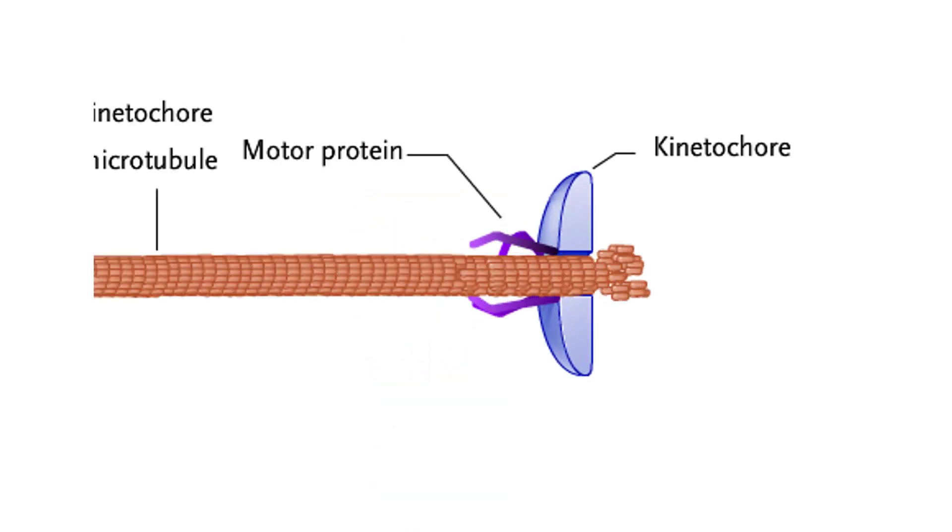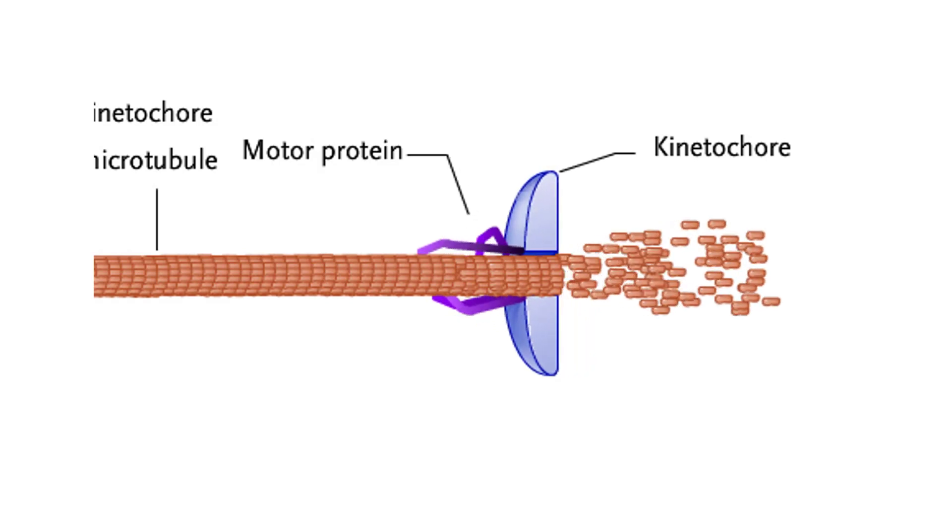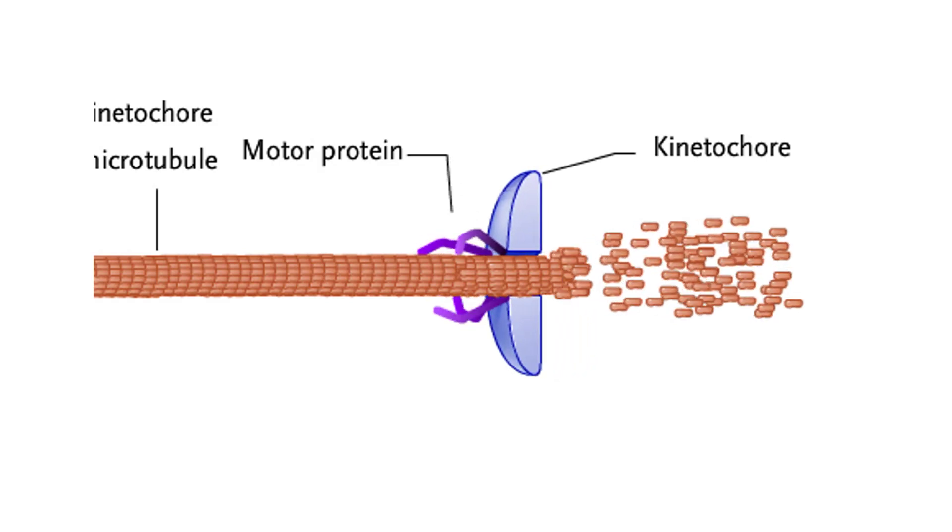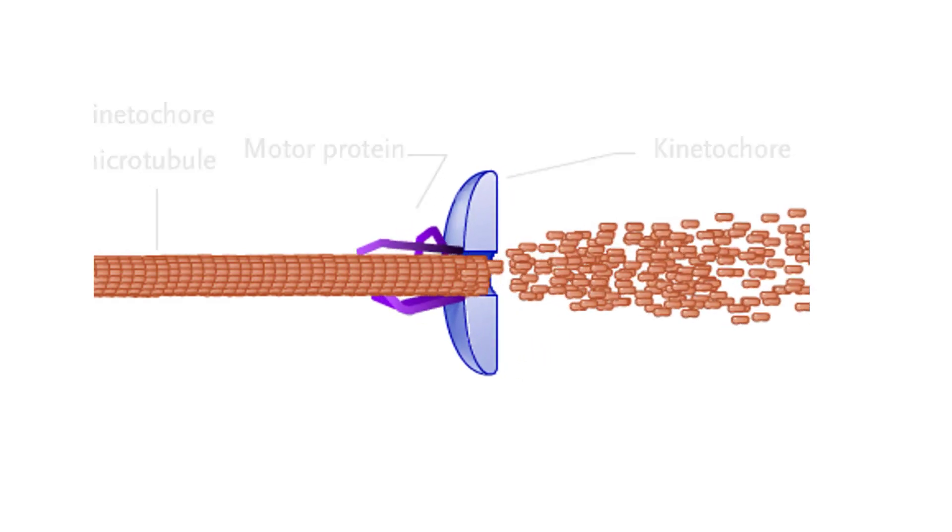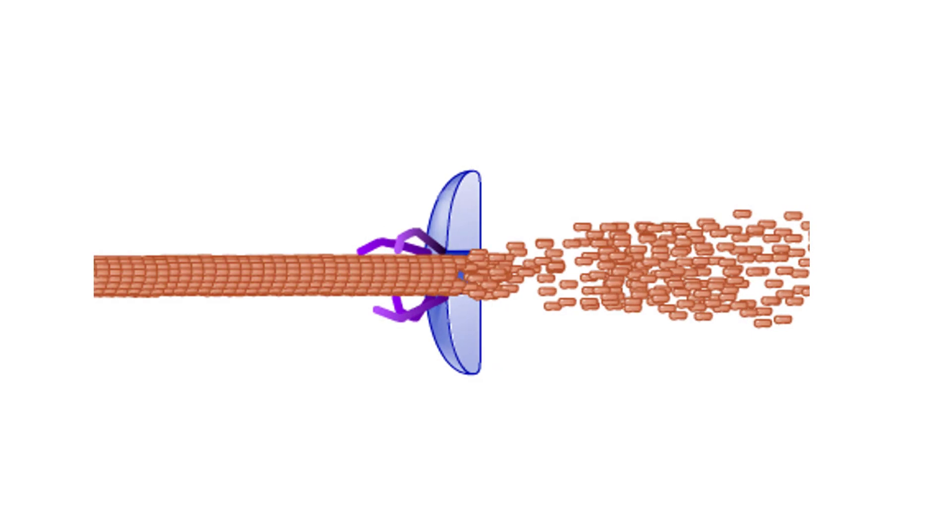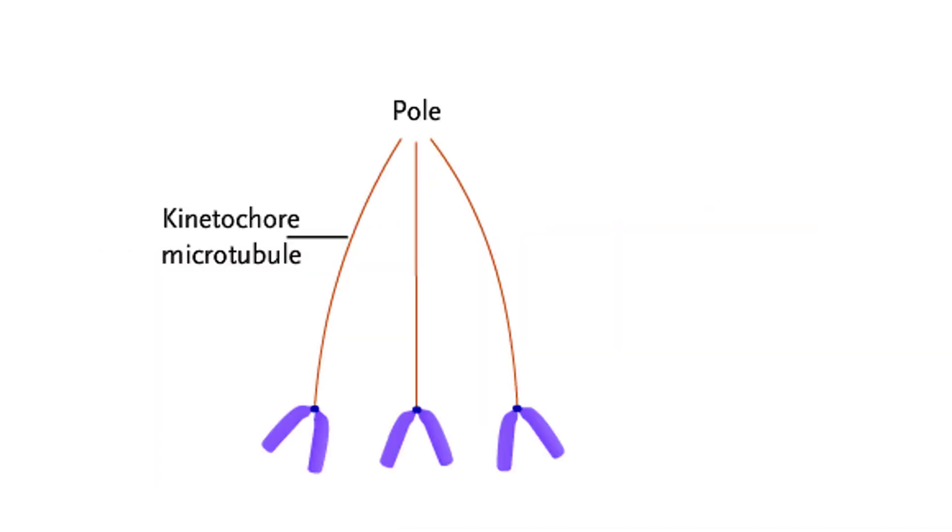The shortening occurs because the kinetochore disassembles the microtubule into tubulin protein subunits as it passes. A motor protein actively walks the kinetochore along the microtubule. The tubulin subunits are reused for later microtubule assembly.